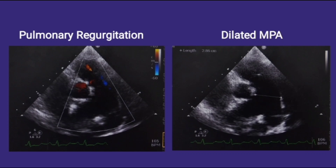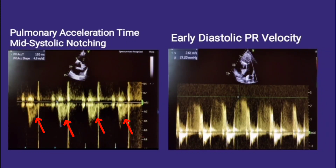In the first echo image, you can appreciate a red colored PR jet in the short axis view at the aortic level. The second image shows a dilated MPA. In the third image, we can see pulmonary acceleration time and mid systolic notching — both can be measured by putting pulse wave Doppler at the pulmonary valve in short axis view. A PAT less than 100 milliseconds and the presence of systolic notching implies pulmonary hypertension. The last image shows the early diastolic PR velocity, measured by putting continuous wave Doppler at the pulmonary valve level.